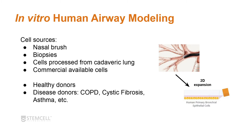For example, in cystic fibrosis you can take a nasal brush from a child and test different treatments on those cells to see what works best for that patient. In most cases, once you take the brush or biopsy and obtain your cells, you expand them in a culture dish or flask in submerged culture. Here I show human primary bronchial epithelial cells in that expansion phase.